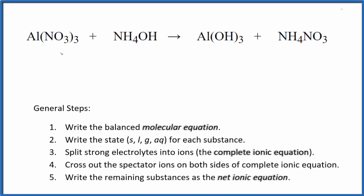In this video, we'll write the balanced net ionic equation for Al(NO3)3 plus NH4OH. This is aluminum nitrate, and this is ammonium hydroxide.